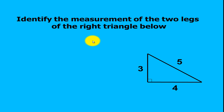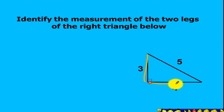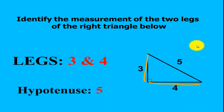Identify the measurement of the two legs of the right triangle below. Identify the legs first — this will be one of the legs, and the other leg is here. So the measurements will be 3 and 4. And then for the hypotenuse, it will be 5.